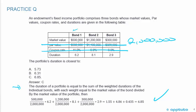For bond 1: 500,000 divided by 2 million times 6.2 gives 1.55. For bond 2: 1.2 million divided by 2 million times 8.1 gives 4.86. For bond 3: 300,000 divided by 2 million times 2.9 gives 0.435. Adding them all up — that's the weighted average — we get 6.85. The correct answer is C.